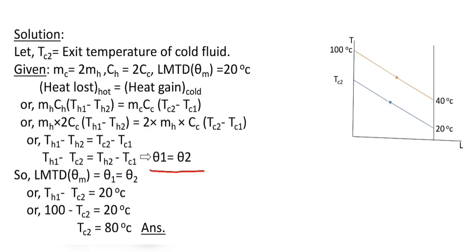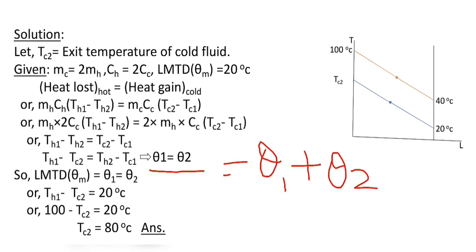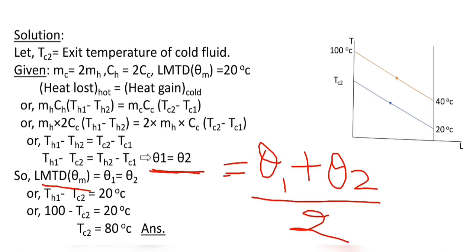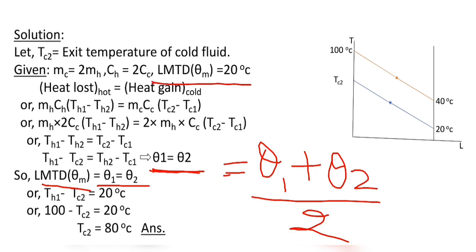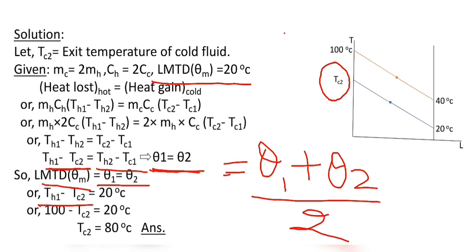So theta1 equals theta2. When the inlet and outlet temperature differences are equal, for a counter flow heat exchanger the LMTD, theta_m, equals (theta1 + theta2) / 2. Since theta1 = theta2, the value of theta_m equals either theta1 or theta2. The value of theta_m is given as 20 degree Celsius, so we set T_H1 − T_C2 = 20 degree Celsius.